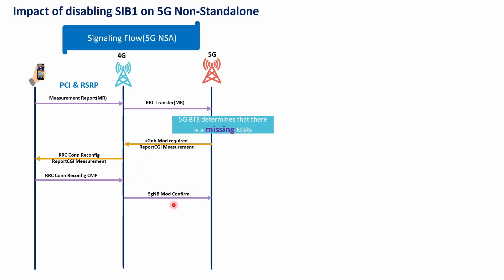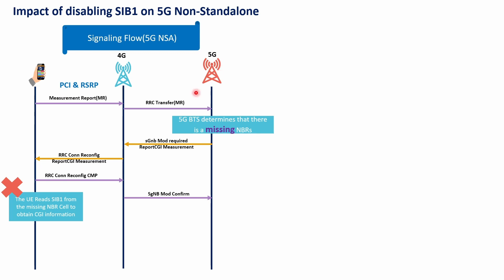At this stage, the UE will start reading the SIB1 information from the missing neighbor cell that was reported earlier, in order to obtain the CGI information. Here is where the issue occurs: if the target 5G side does not have SIB1 enabled, the UE will not be able to decode or acquire the CGI information. In that case, the UE will keep reporting the measurement report containing only PCI and RSRP, the handover will not be completed, and the 5G will not be able to add the missing neighbor — which is why NR will not be working.